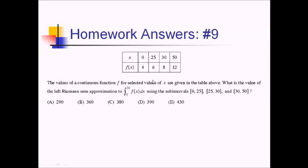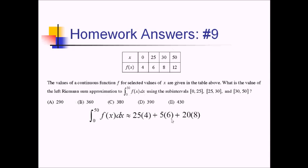For number 9, we're given a continuous function defined by a table, and we want to approximate with a left Riemann sum, so LRAM, from 0 to 50, using these subintervals from the table. So we're going to have 3 rectangles. We've got the interval from 0 to 25, that's a base of 25 for the rectangle, times the left height of 4. Next, we've got the interval from 25 to 30, so a base of 5 times our left height of 6. And finally, the last interval is a distance of 20 times the height of 8. Adding these all together: 100 plus 30 is 130, plus 160 is going to be 290. So choice A.